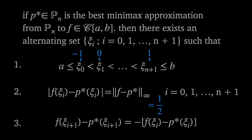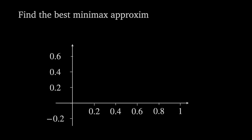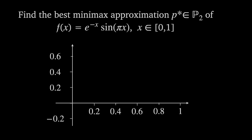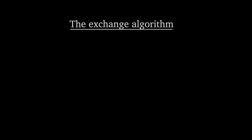Now let's look at a more complicated example: find the best minimax approximation p* in P₂ of f(x) = e^(-x) sin(πx) over the interval [0, 1]. For this we'll need to use an algorithm called the exchange algorithm.